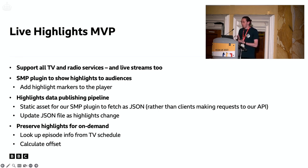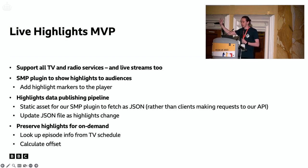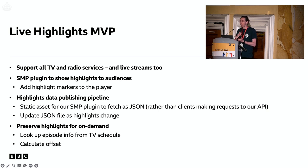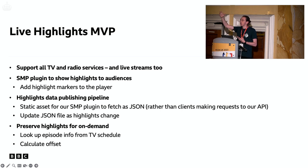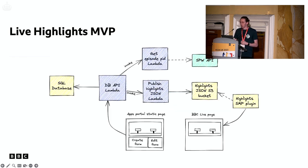We also needed a data publishing pipeline. Instead of all the clients reaching out to our API, we wanted just a static asset — a JSON file containing all the highlights for a particular stream or service. We would keep rewriting that JSON file as editors updated highlights in the management system. We also wanted to preserve highlights created on live TV for on-demand use — calculating the offset so highlights would show up at the same point when a programme like Newsnight goes on-demand.